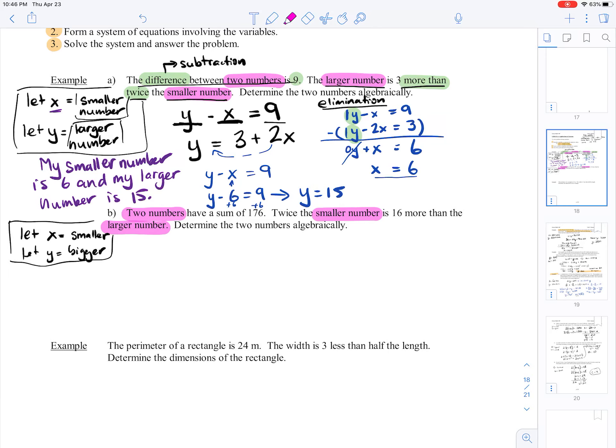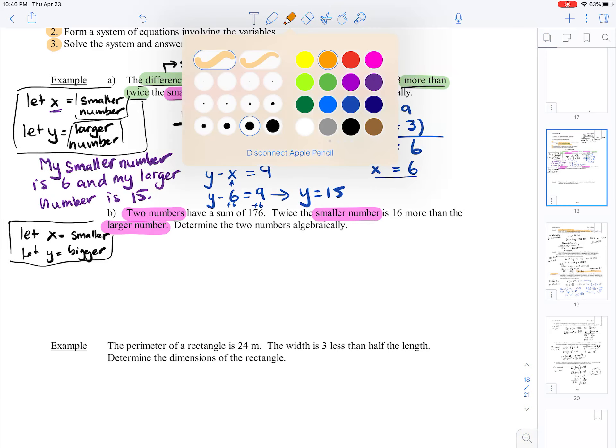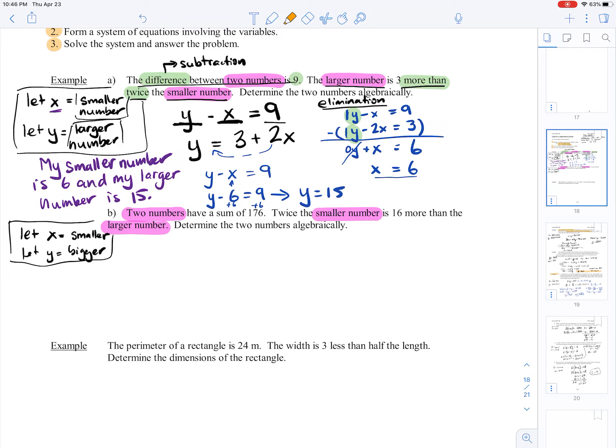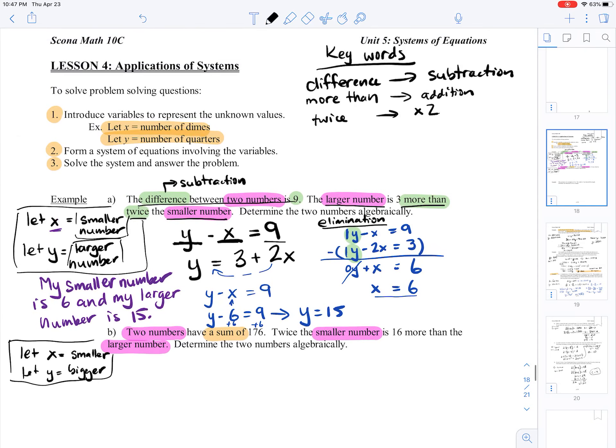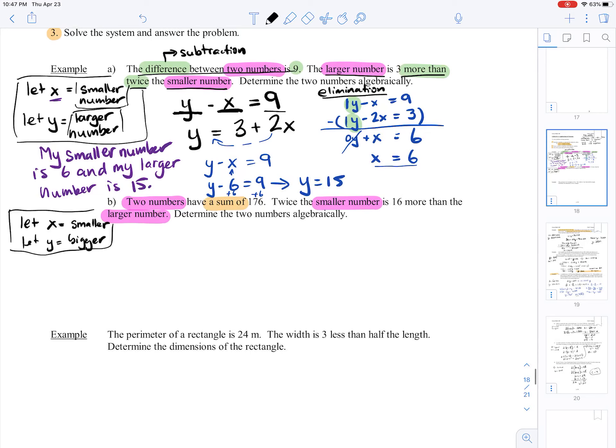Now I'm going to go through and try and write an equation that represents this relationship. So my first sentence tells me that two numbers have a sum of 176. Remember, a sum is addition. So x plus y equals 176.